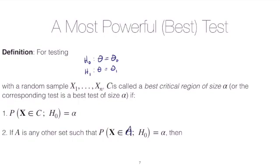And if A is another critical region such that it's a critical region of size alpha, then it must be the case that the power function for C of theta is greater than the power function on A of theta.